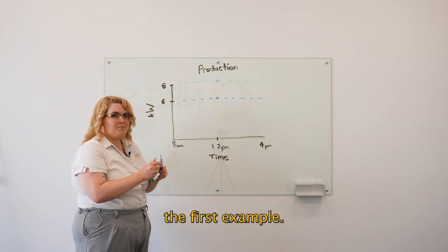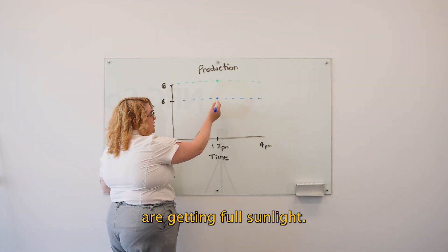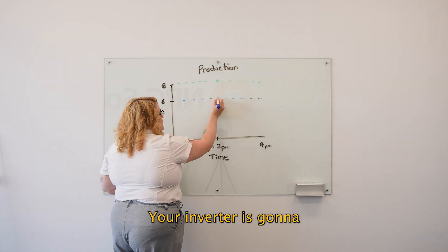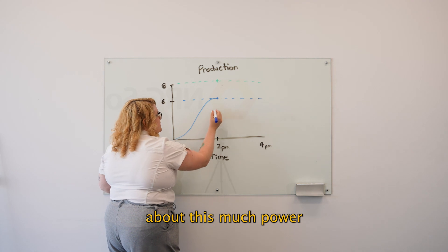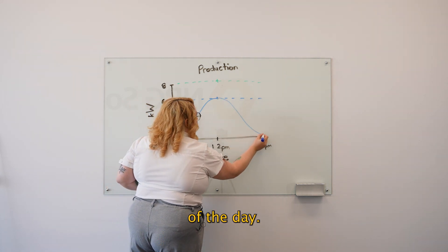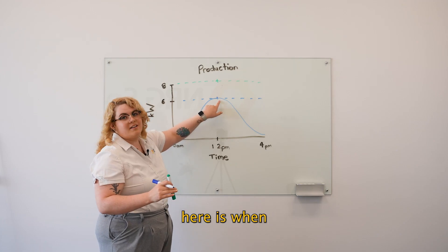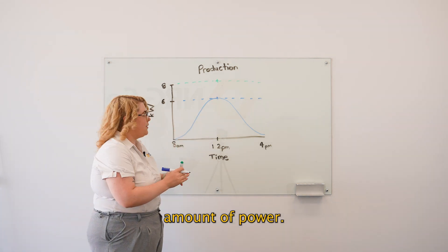To start with the first example, in the middle of the day when your panels are getting full sunlight, your inverter is going to pull down about this much power over the course of the day. So just in the middle of the day here is when you'll be producing at that maximum amount of power.